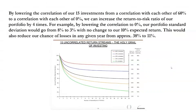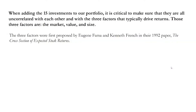Consider this example. Suppose we need to pick 15 investments to construct a portfolio. Assume we've identified two groups of 15 investments, all generating an absolute annual return of 10%. The first group has a correlation of 60% with each other, while the second group has a correlation of 0% — they're all uncorrelated. By choosing the uncorrelated group, we can increase the total portfolio return-to-risk ratio by four times, decreasing the standard deviation and reducing chances of losses in any given year. When picking investments, it's beneficial to pick those uncorrelated with each other and with the three factors that typically drive returns.